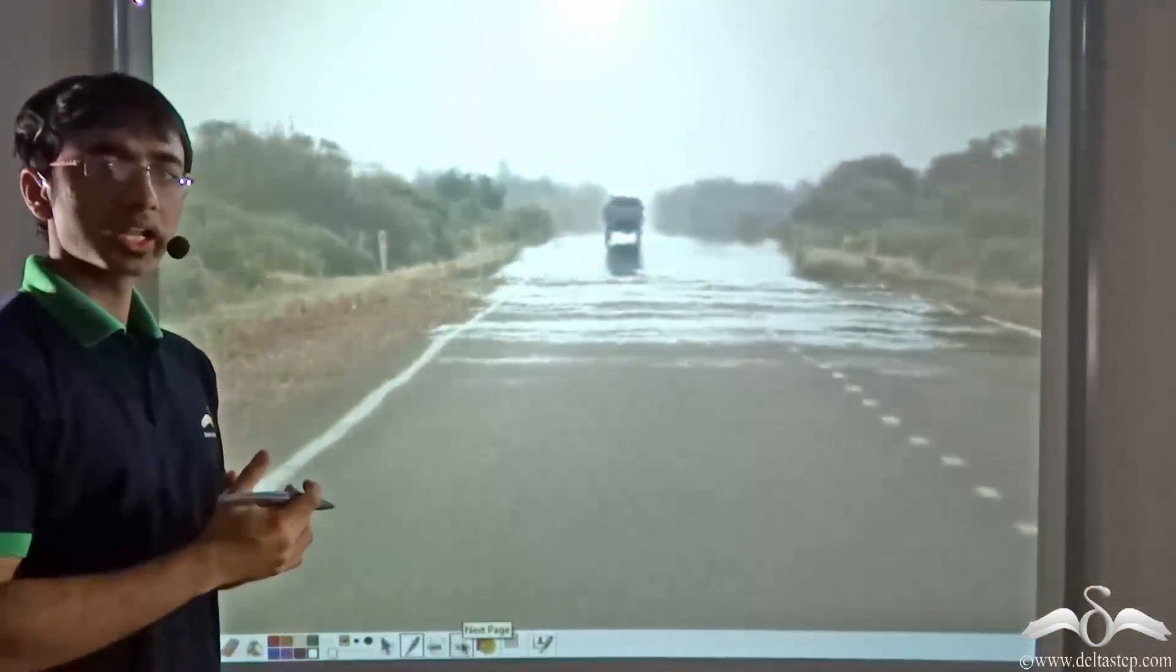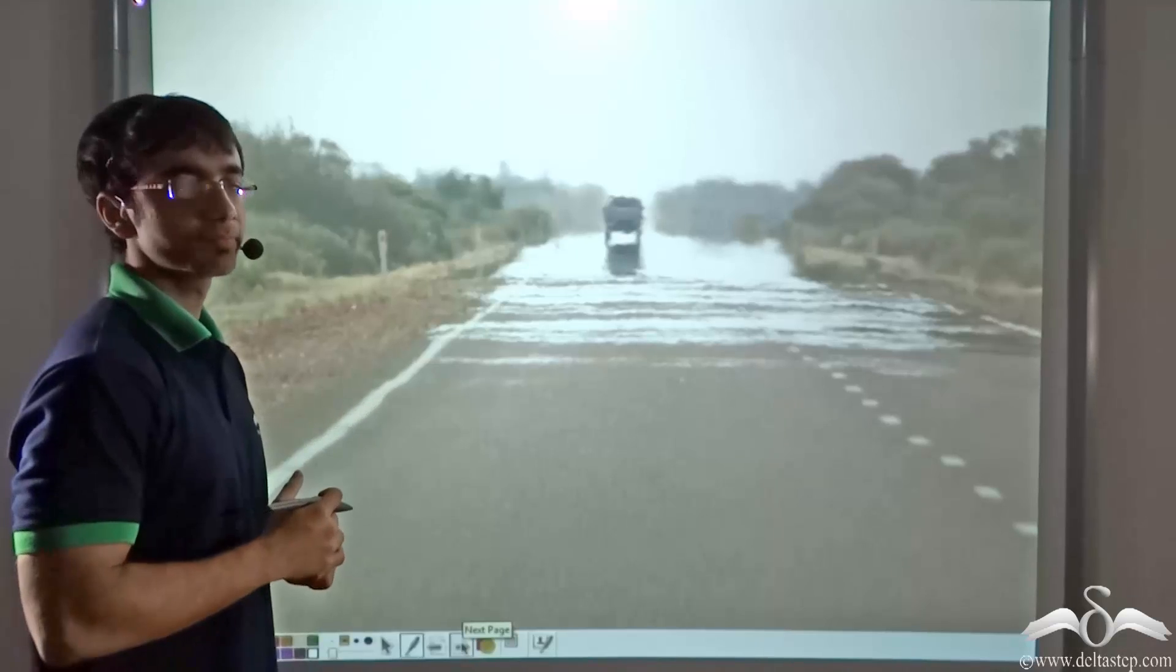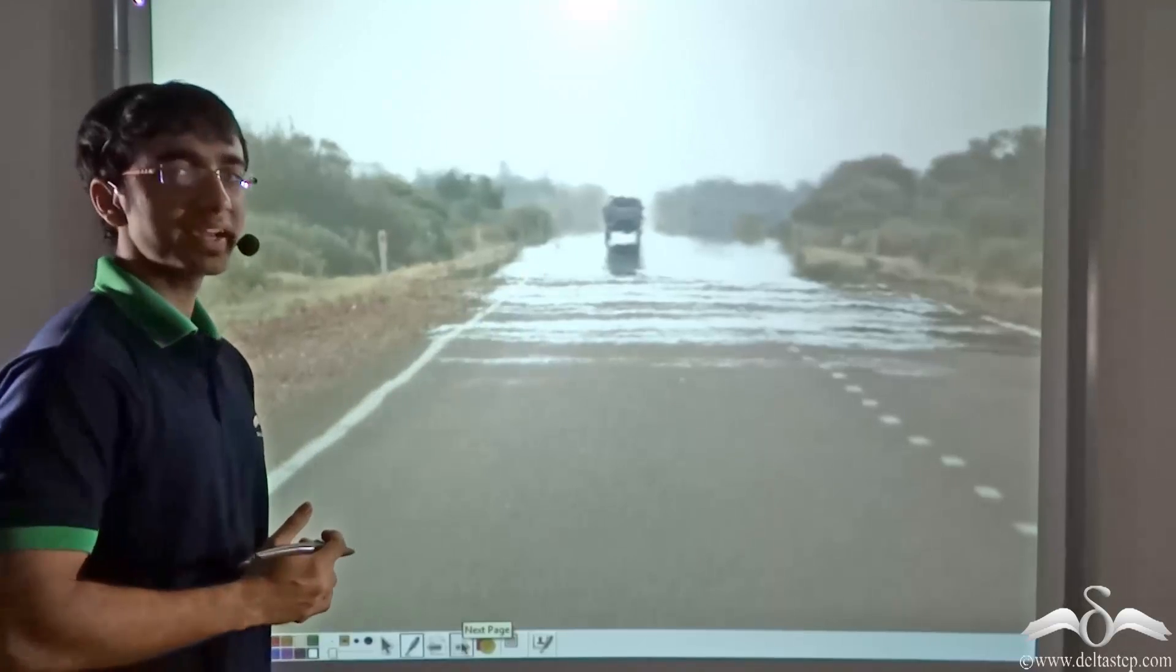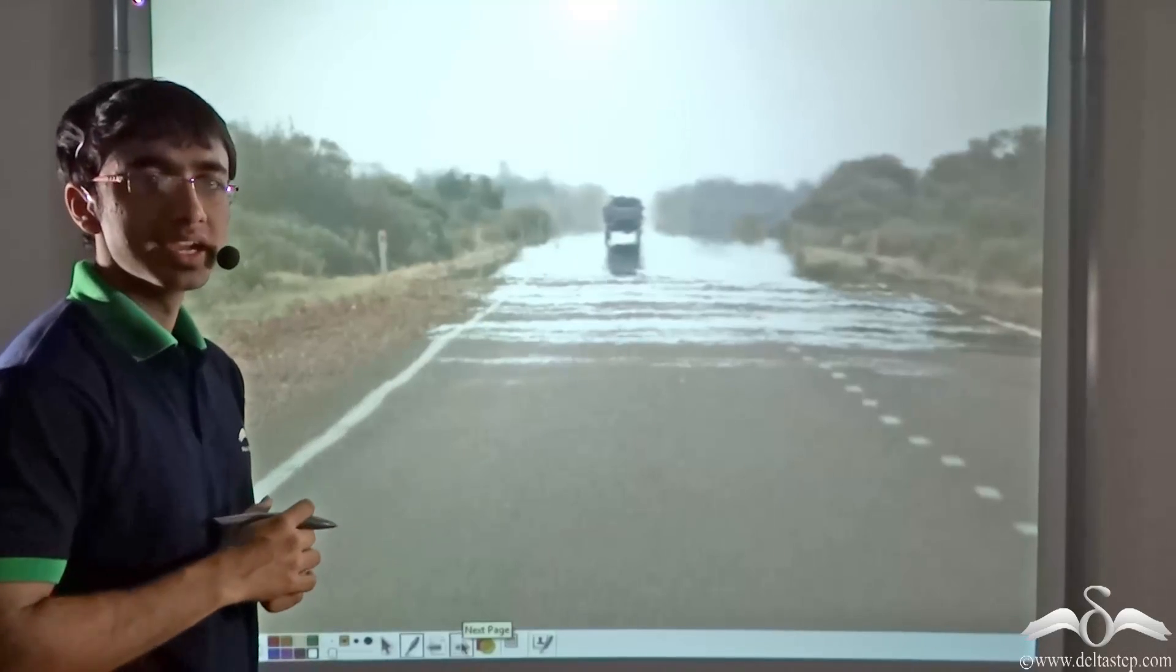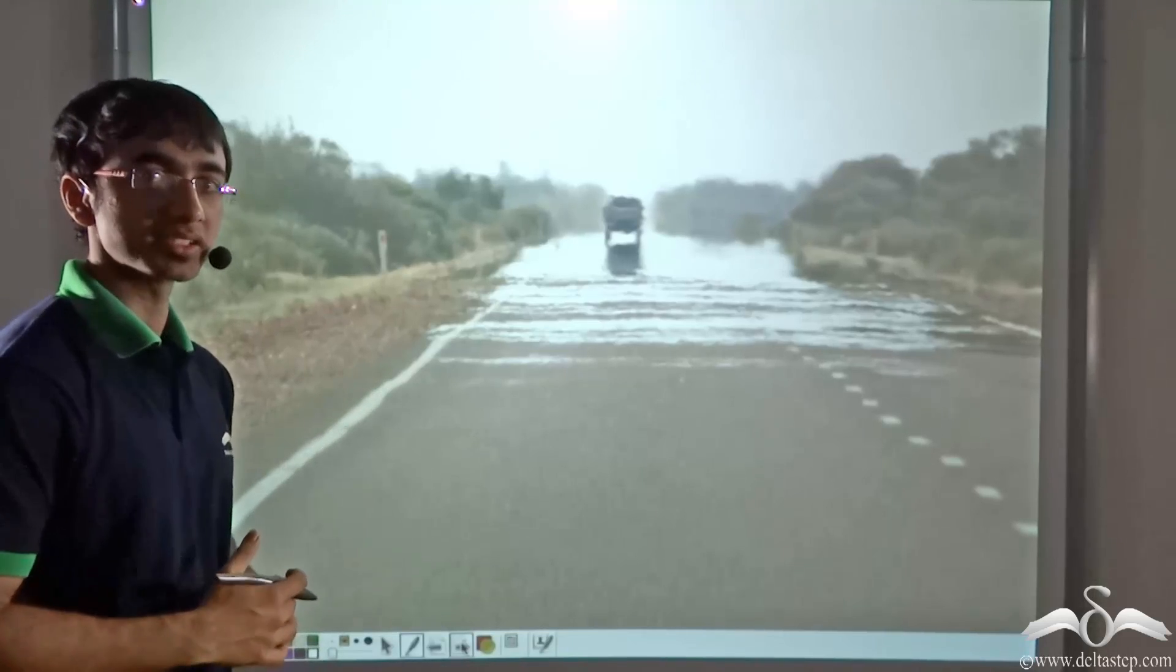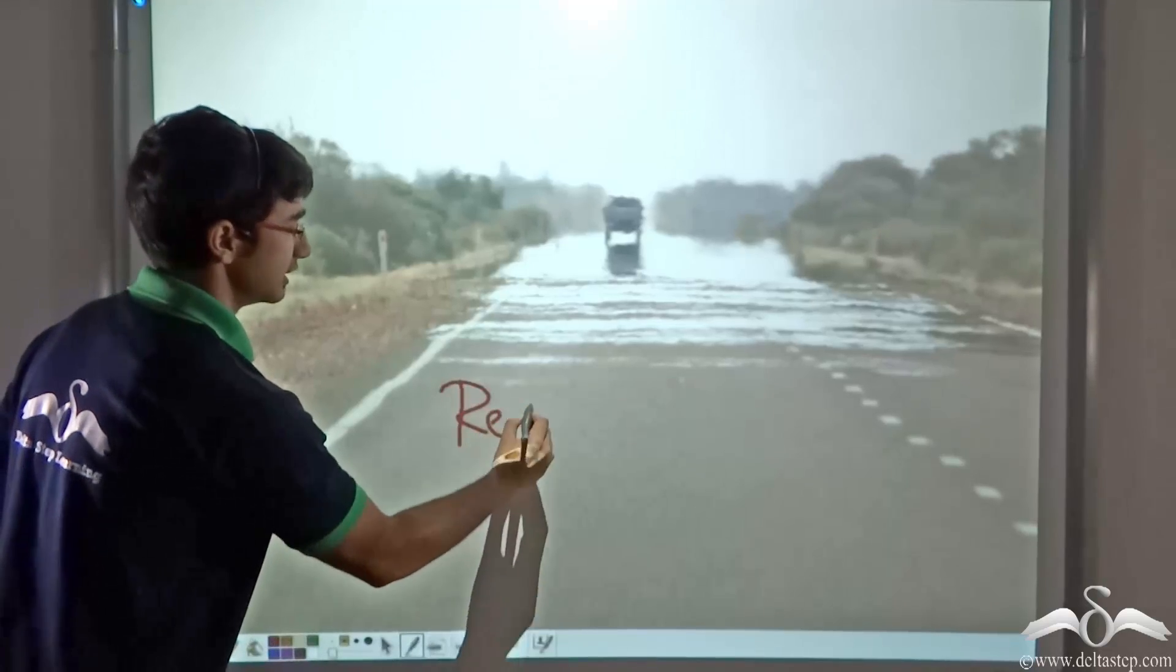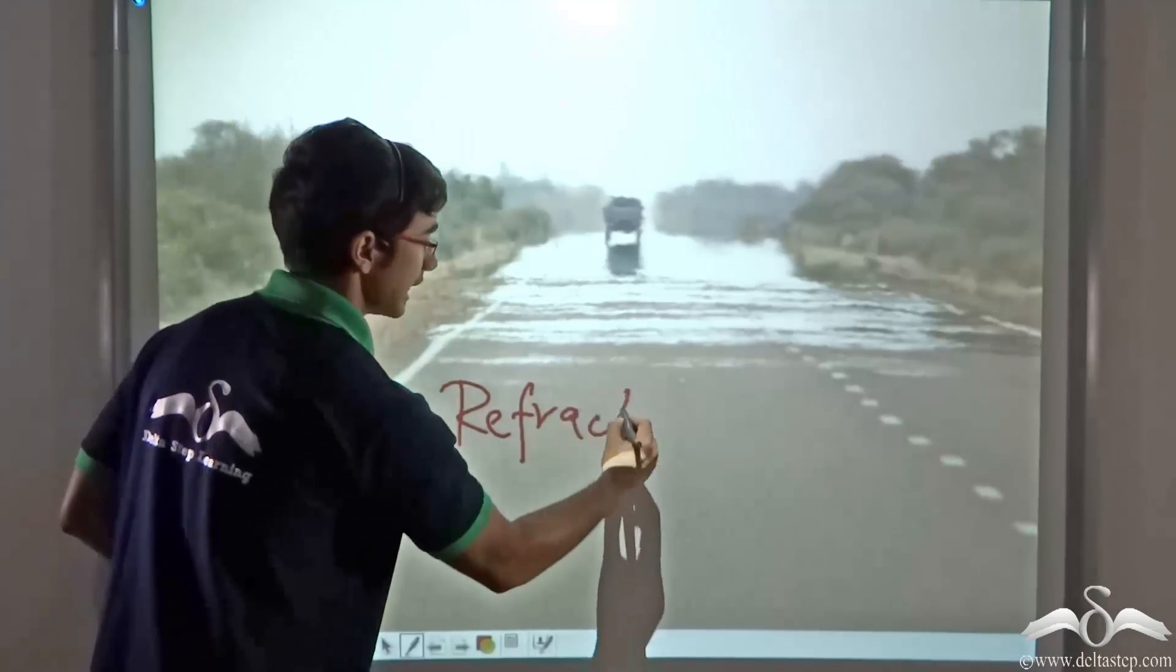Let me give you another example. On a very hot day, if you travel along a long road, at a distance you will find that the road appears watery. It appears shimmery and kind of wet. Do you know why this happens? The answer to that again is refraction of light.